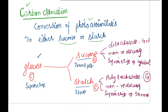Now a very important point — during the synthesis of sucrose and starch, there is a very important step in which UTP is involved. UTP stands for uridine triphosphate.